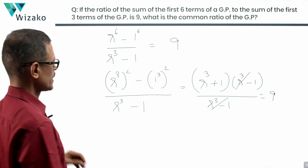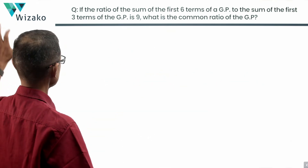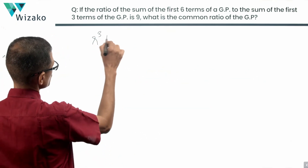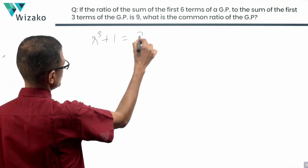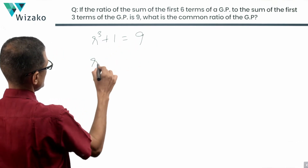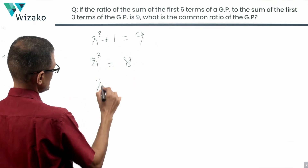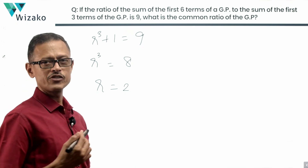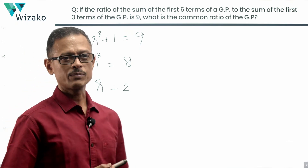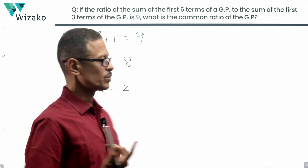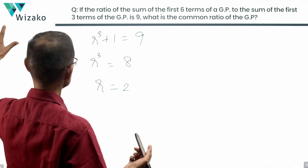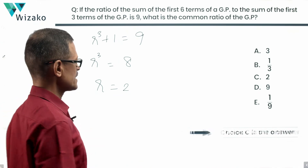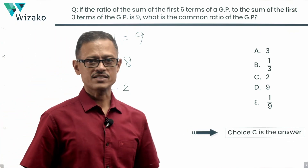The (r cubed minus 1) terms cancel, leaving r cubed plus 1 equals 9, so r cubed equals 8, and therefore r equals 2. The common ratio of this geometric progression is 2. Looking at the answer options, 2 is choice C — choice C is the correct answer.